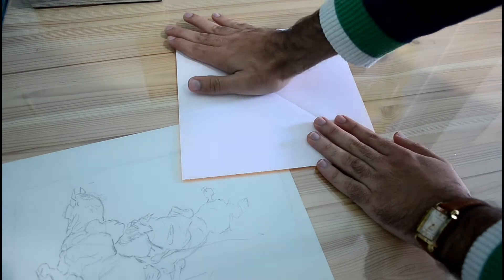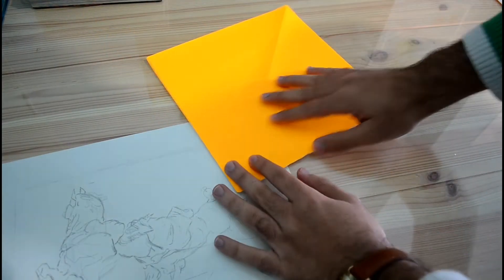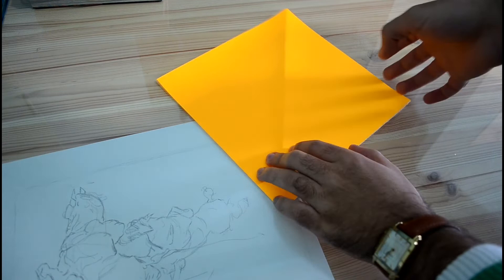Now we have a square. Fold again on this line like this.